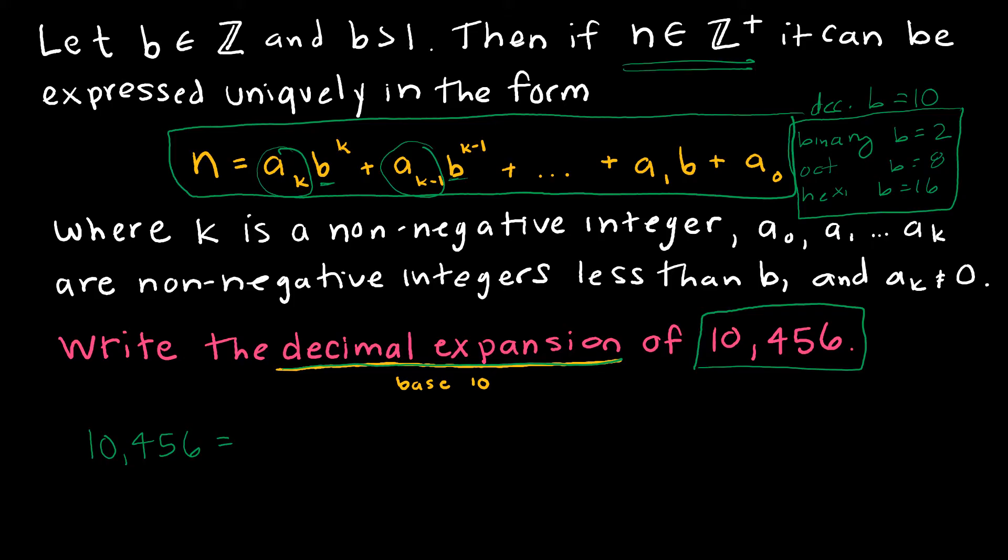If I wanted to write 10,456 as a decimal expansion, I would say 1 is in the 10,000th place. This is a base 10 number. So this is the ones place, that's 10 to the 0. This is the tens place, that's 10 to the 1st. This is the hundreds place, that's 10 squared. This is the thousands place, that's 10 to the 3rd. And this is the 10 thousands place, or 10 to the 4th. So this is 1 times 10 to the 4th, plus 0 times 10 to the 3rd, plus 4 times 10 squared, plus 5 times 10 to the 1st, plus 6 times 10 to the 0.